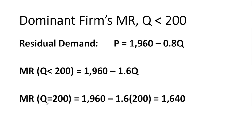For quantities less than 200 units, the slope of the marginal revenue curve is double the slope of the demand curve. The marginal revenue corresponding to the residual demand curve is 1,960 minus 1.6Q. It's useful to calculate the marginal revenue at a quantity of 200: plugging into 1,960 minus 1.6 times 200, the marginal revenue of producing 200 units is 1,640.